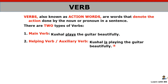For example, if I write 'Kushal playing the guitar', we don't know if he is playing now, was playing before, or will play later. But if we add a helping verb like 'is', then 'Kushal is playing the guitar' — now we know he is doing it now. The auxiliary verb helps in telling the time. Main verb can tell both action and time — like 'plays' means he plays regularly, 'played' means it happened in the past.